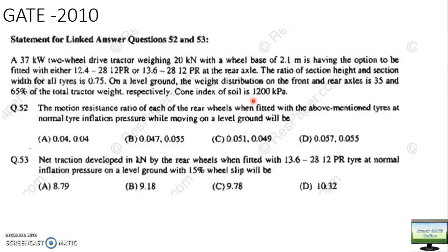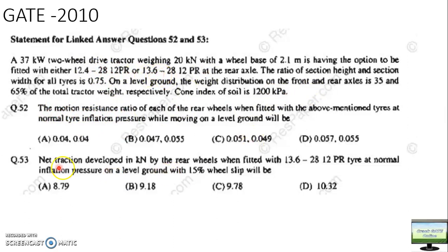Moving forward, in GATE 2010 they asked this question - please pause the video and try to solve it first. A 32 kilowatt tractor, two-wheel drive, weighing 20 kilonewtons, wheelbase of 2.1 meters, fitted with 12.4-28 rear tires and 13.6-28 tires. The aspect ratio (section height to section width) is given as 0.75 or 75%.